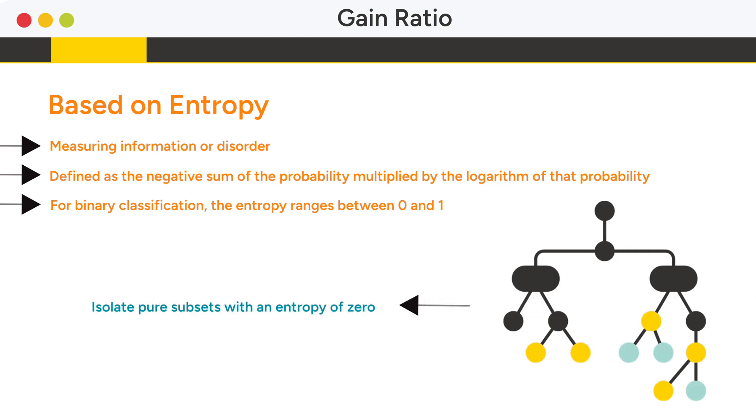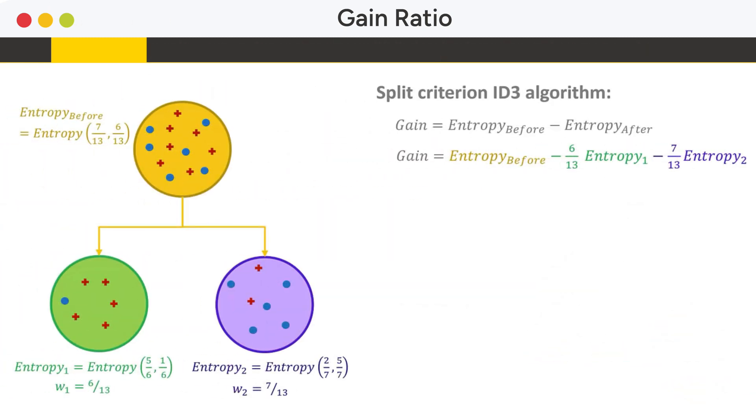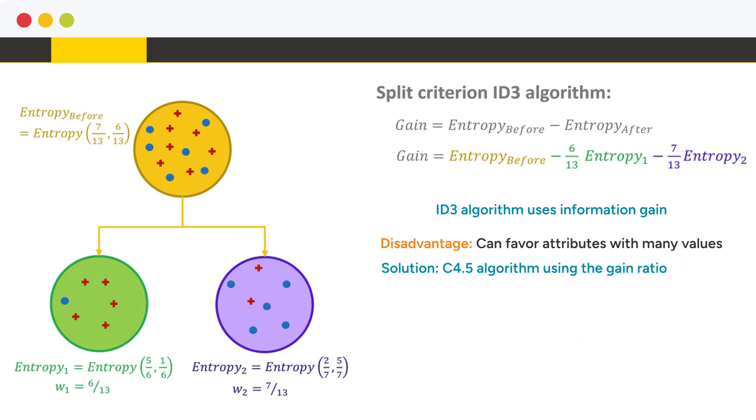The goal of the decision tree is to isolate pure subsets with an entropy of zero. To measure the effectiveness of a split, we can evaluate the difference between the entropy before and after the split. The ID3 algorithm uses information gain but can favor attributes with many values, which the C4.5 algorithm corrects using the gain ratio.